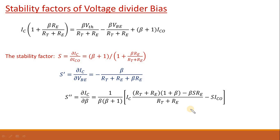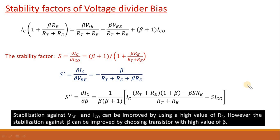Now the third one is S double prime. If you evaluate S double prime which is equals to del Ic upon del beta, you will get this big expression. If you look at this expression carefully, the beta is in denominator. So if you choose high value of beta, S double prime will decrease. Thus what we can say is that stabilization against Vbe and Ico can be improved by using high value of Re. However, if you want to improve the stabilization against beta, then you need to choose transistor with high value of beta.